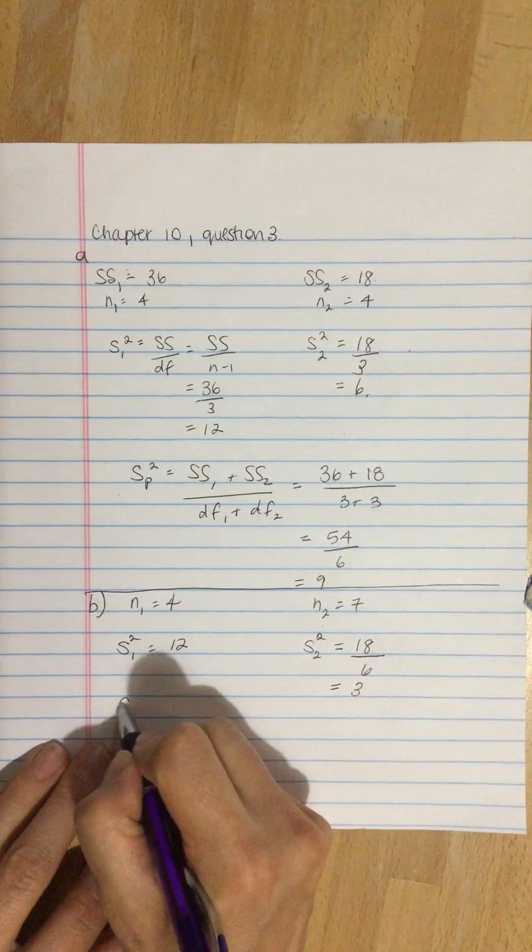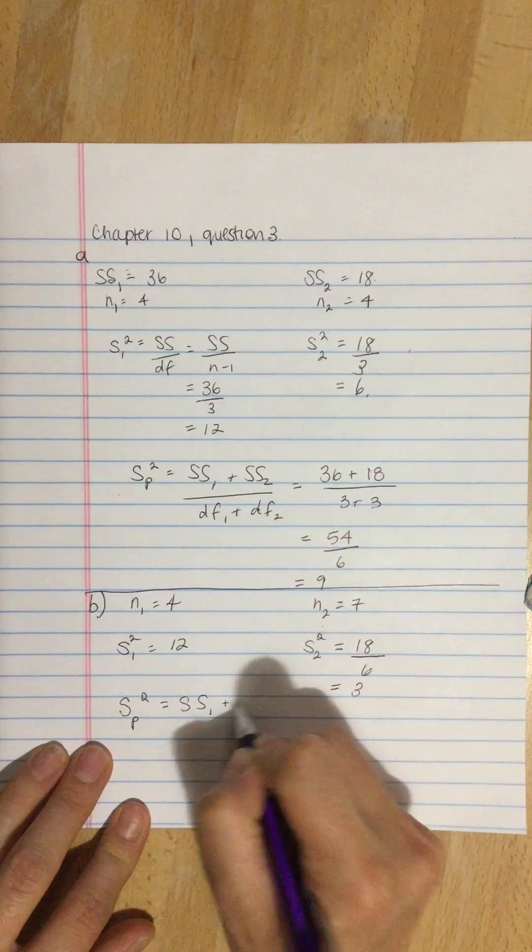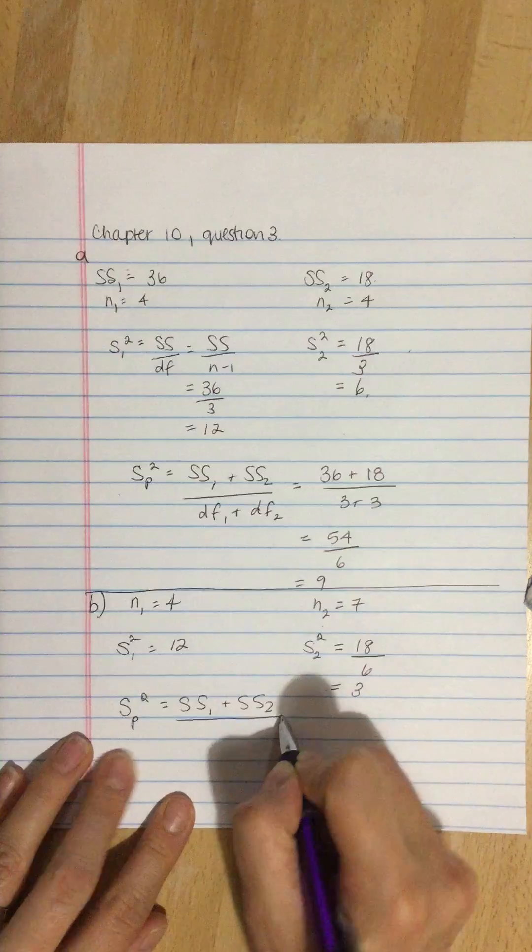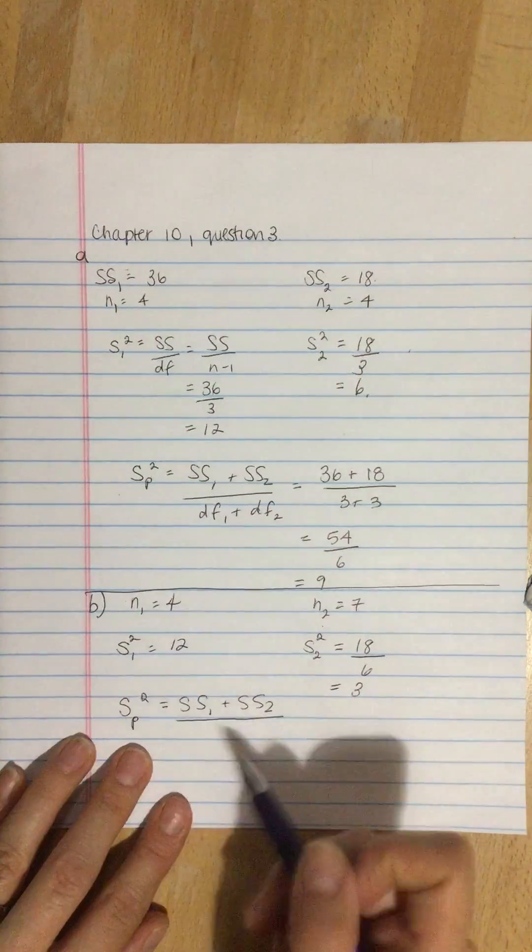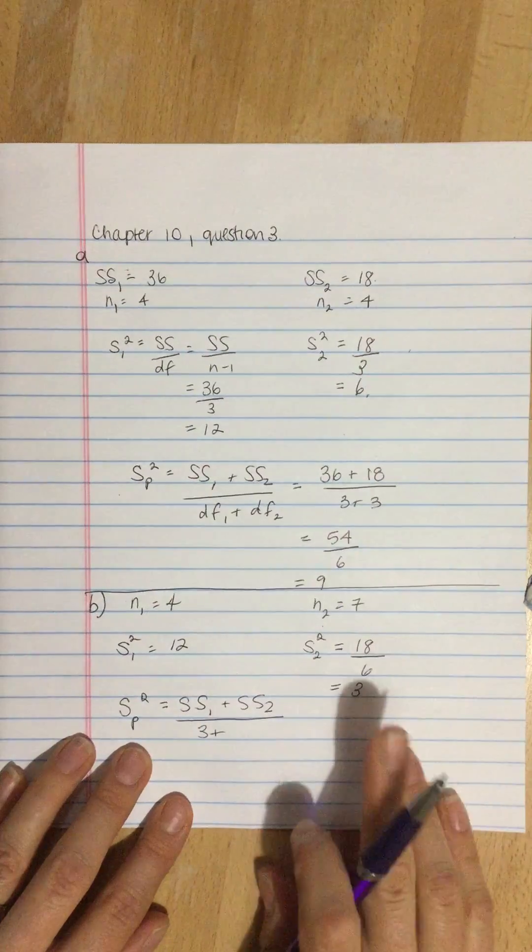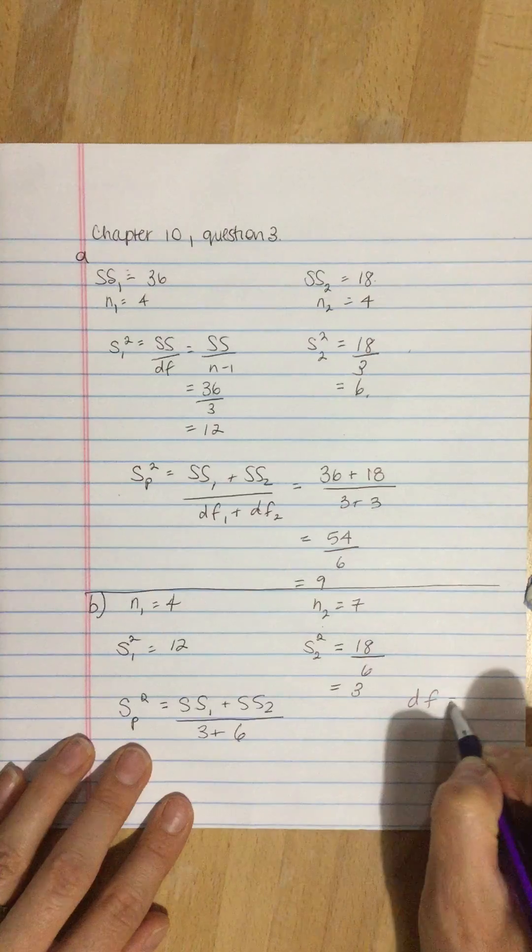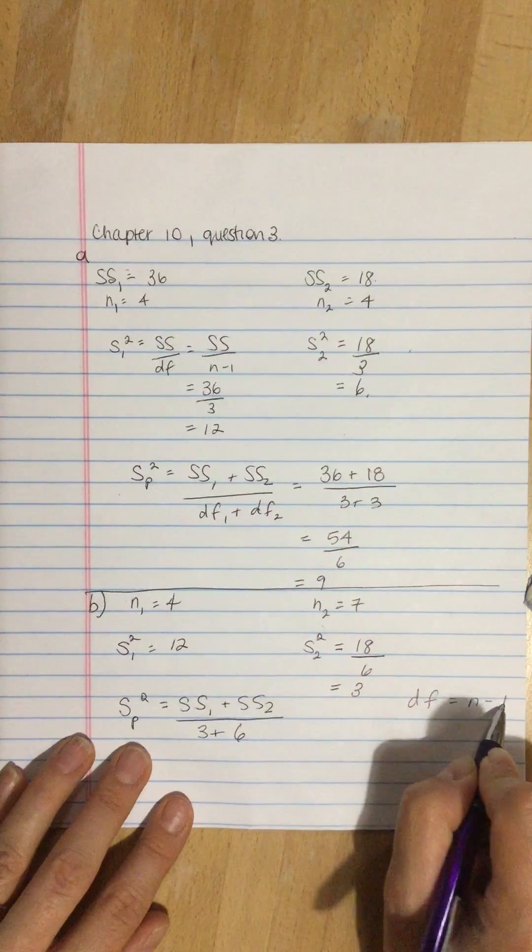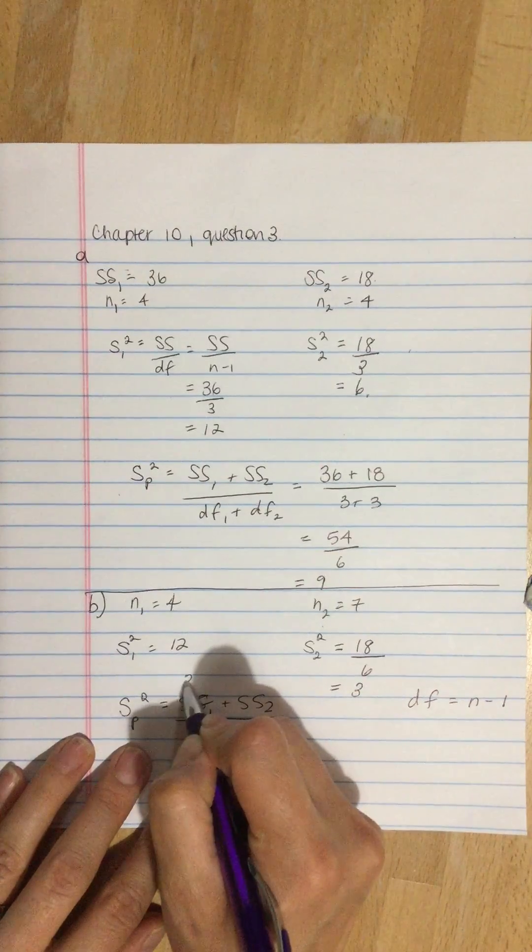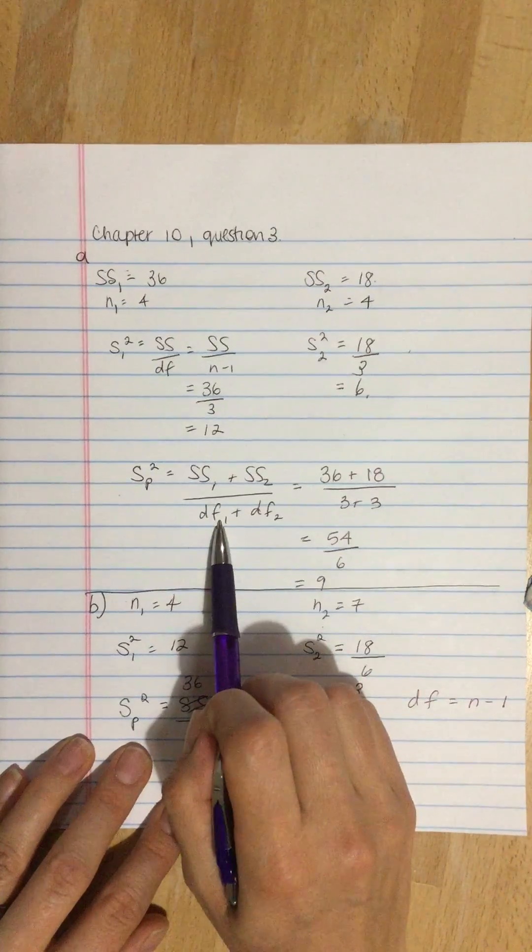We're going to calculate that pooled variance. I'm going to take sum of squares 1 plus sum of squares 2, divide by the degrees of freedom of 1, which is 3, plus the degrees of freedom of the second, which is 6. Remember that degrees of freedom equals n minus 1. I guess I should have put this in here. 36, and this one's 18. So it's the same formula as we used up here.